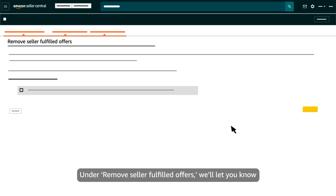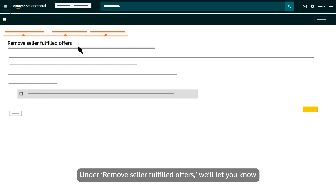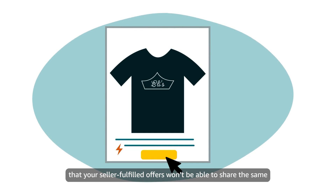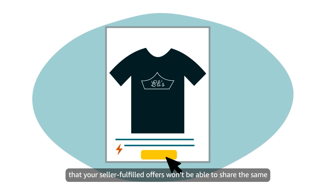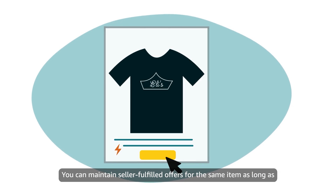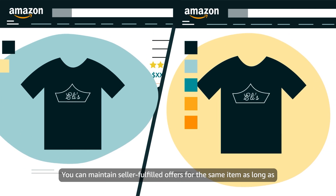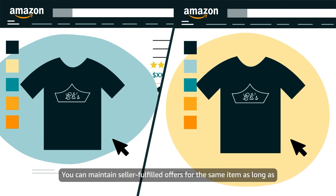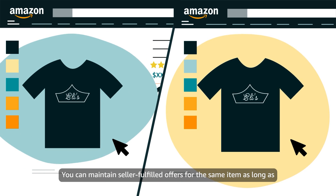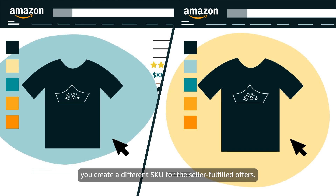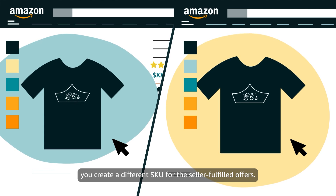Under Remove Seller Fulfilled Offers, you'll be informed that your Seller Fulfilled Offers won't be able to share the same SKUs as your FBA offers. You can maintain Seller Fulfilled Offers for the same item as long as you create a different SKU for the Seller Fulfilled Offers.